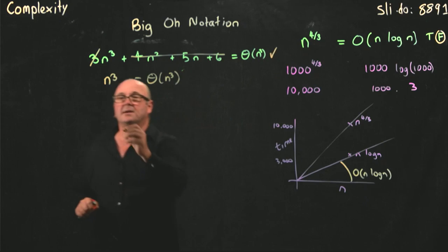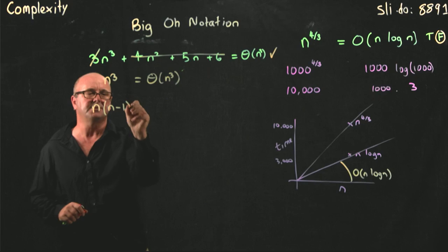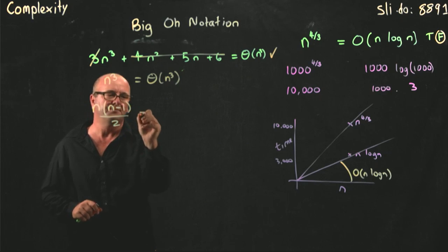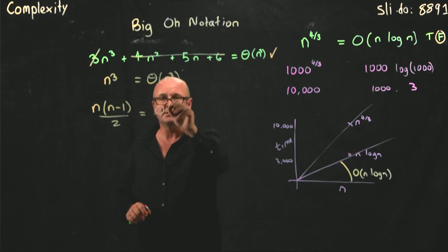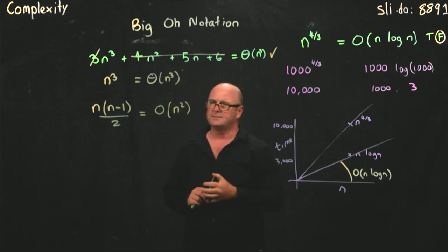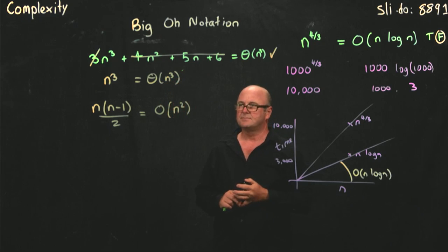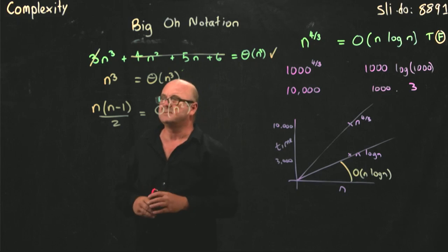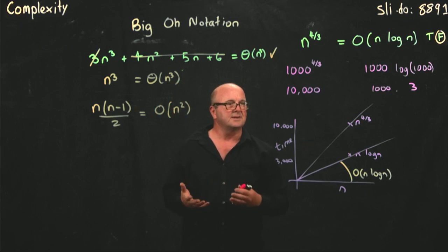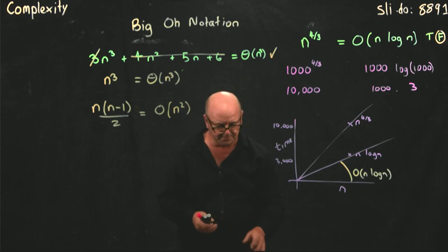Let's take a look at another one. What about n times n minus 1 over 2? Is a member of the set of equations, or functions, excuse me, that are big O of n squared? True or false? That's true. The left-hand side, n times n minus 1, is n squared minus n over 2. So, that's true.